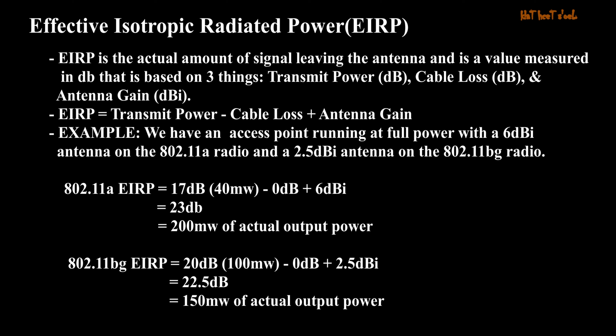Effective Isotropic Radiated Power (EIRP) is the actual amount of signal leaving the antenna, and is a value measured in dB based on three things: transmit power in dB, cable loss in dB, and antenna gain in dBi. EIRP = transmit power minus cable loss plus antenna gain. Example: an access point running at full power with a 6 dBi antenna on the 802.11a radio and a 2.5 dBi antenna on the 802.11bg radio. 802.11a: EIRP = 17 dB (40 mW) minus 0 dB plus 6 dBi = 23 dB = 200 mW actual output power. 802.11bg: EIRP = 20 dB (100 mW) minus 0 dB plus 2.5 dBi = 22.5 dB = 150 mW actual output power.